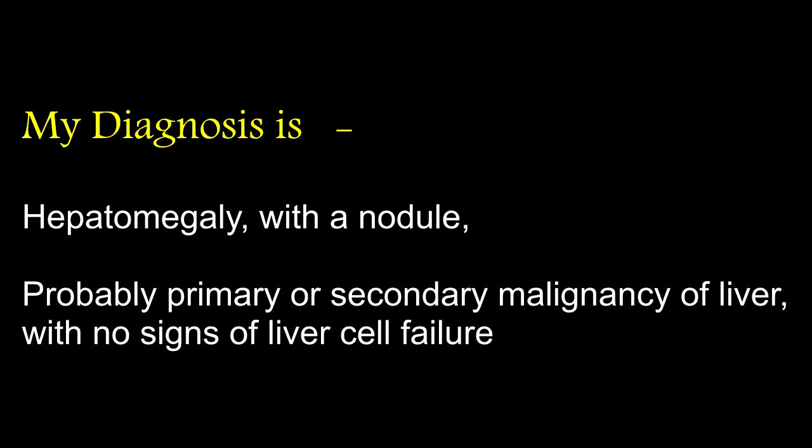Why do you think it is a malignancy of the liver? This is a middle-aged chronic alcoholic presenting with marked anorexia and rapid loss of weight. There is hepatomegaly with a hard nodule and a bruit heard over the lump, making primary hepatoma the most likely cause. It could also be a secondary malignancy with a single large nodule. Which secondaries are commonly deposited in the liver? Bloodborne metastasis, particularly from the GI tract, kidneys, bones, lungs, thyroid, breast, and malignant melanoma.